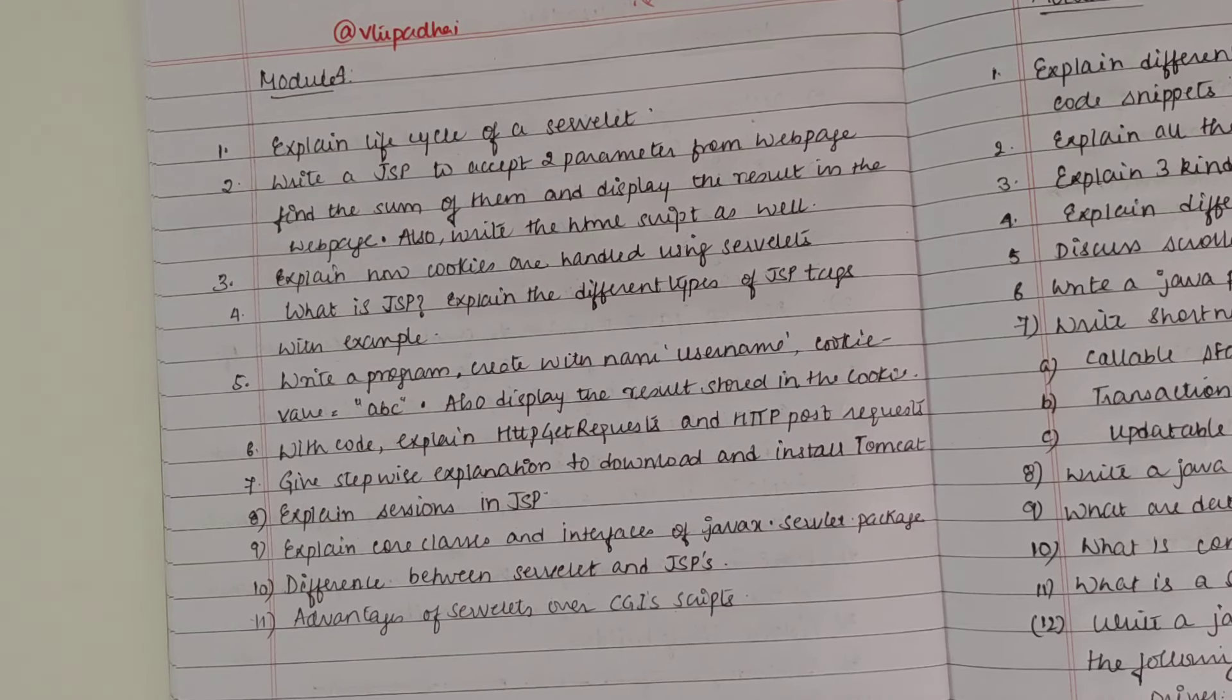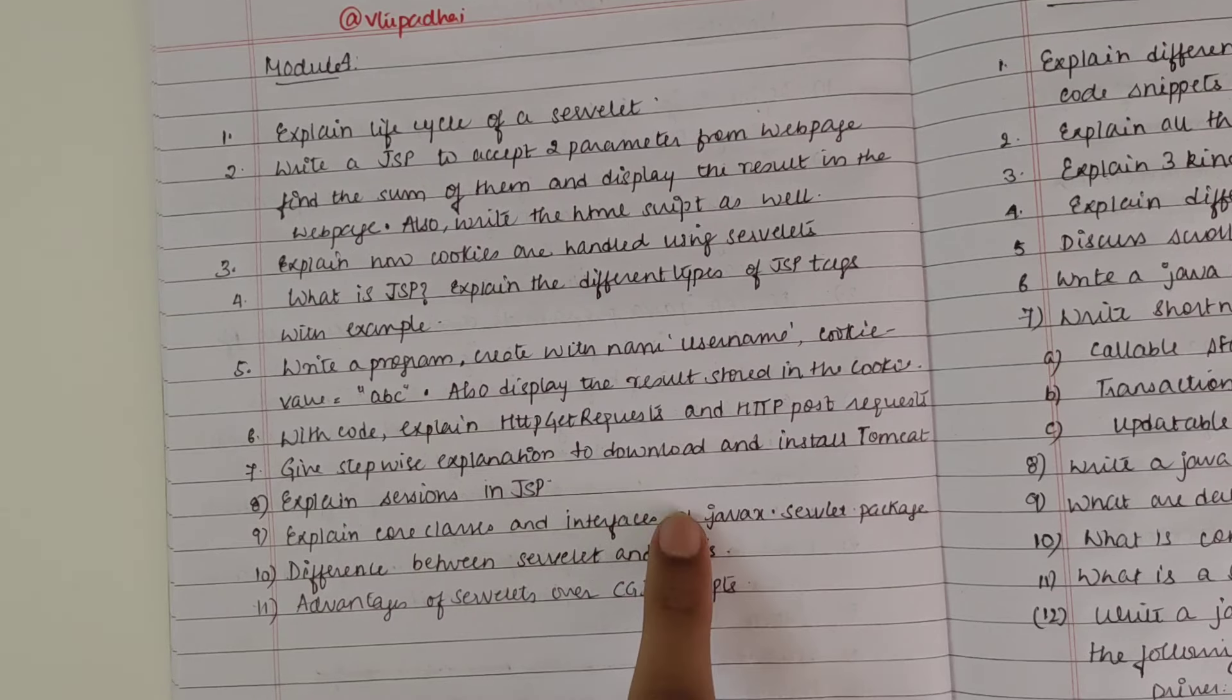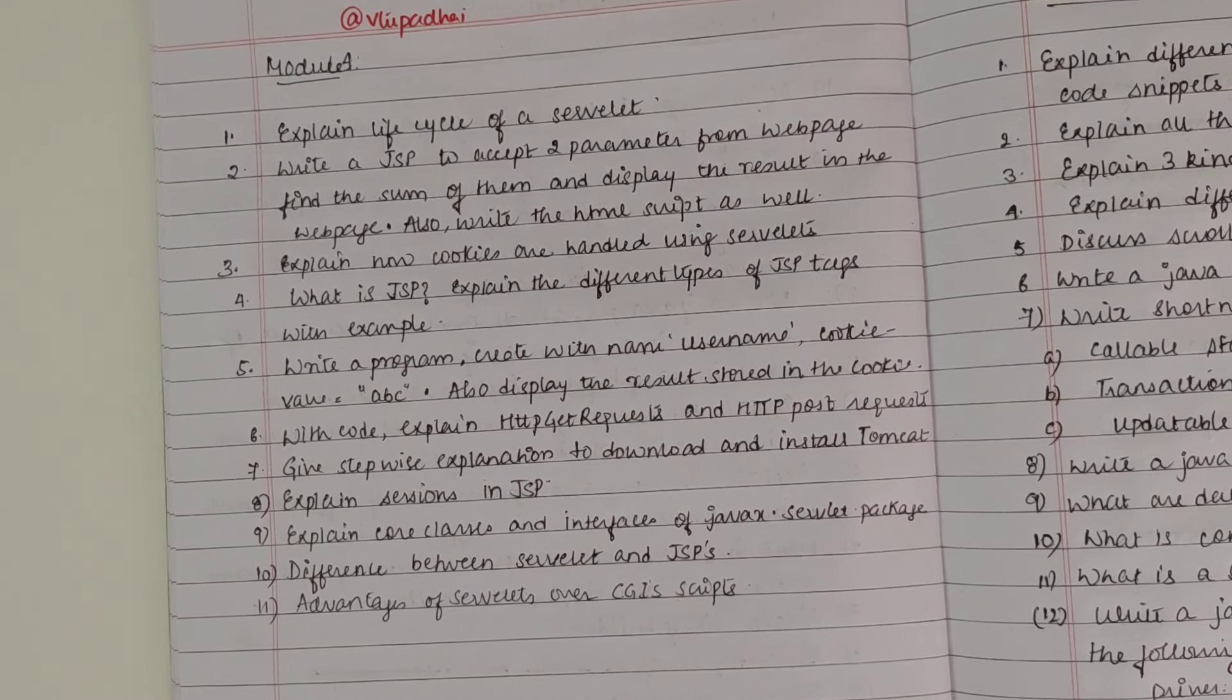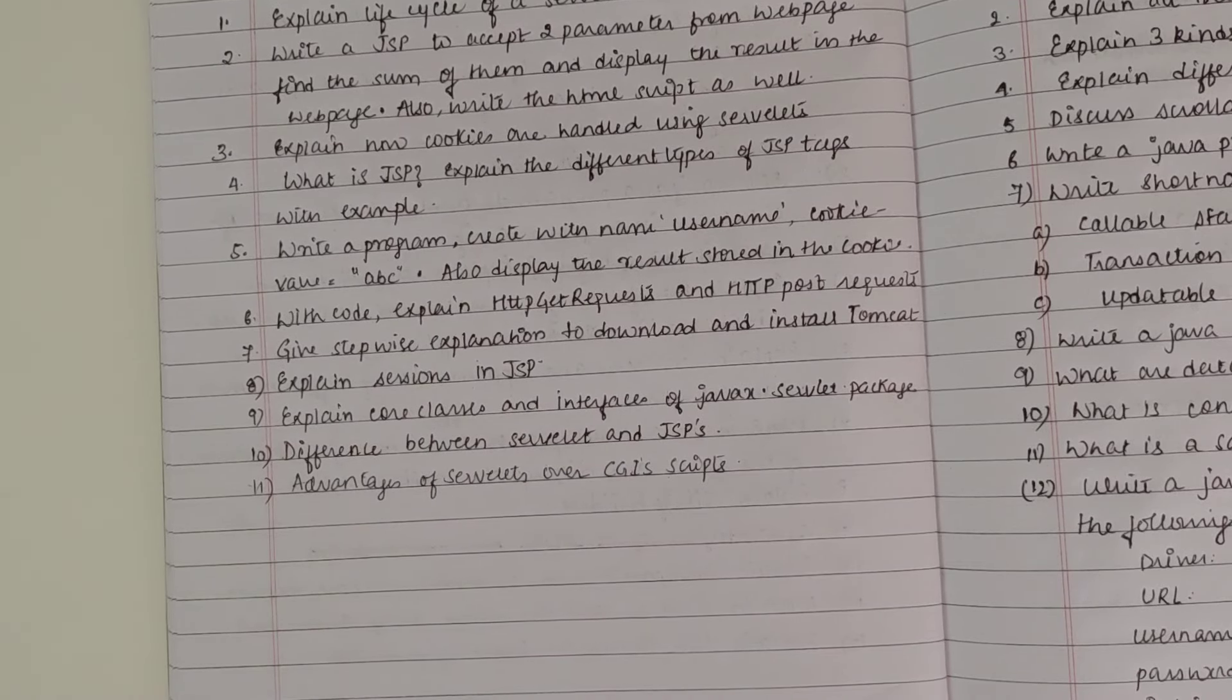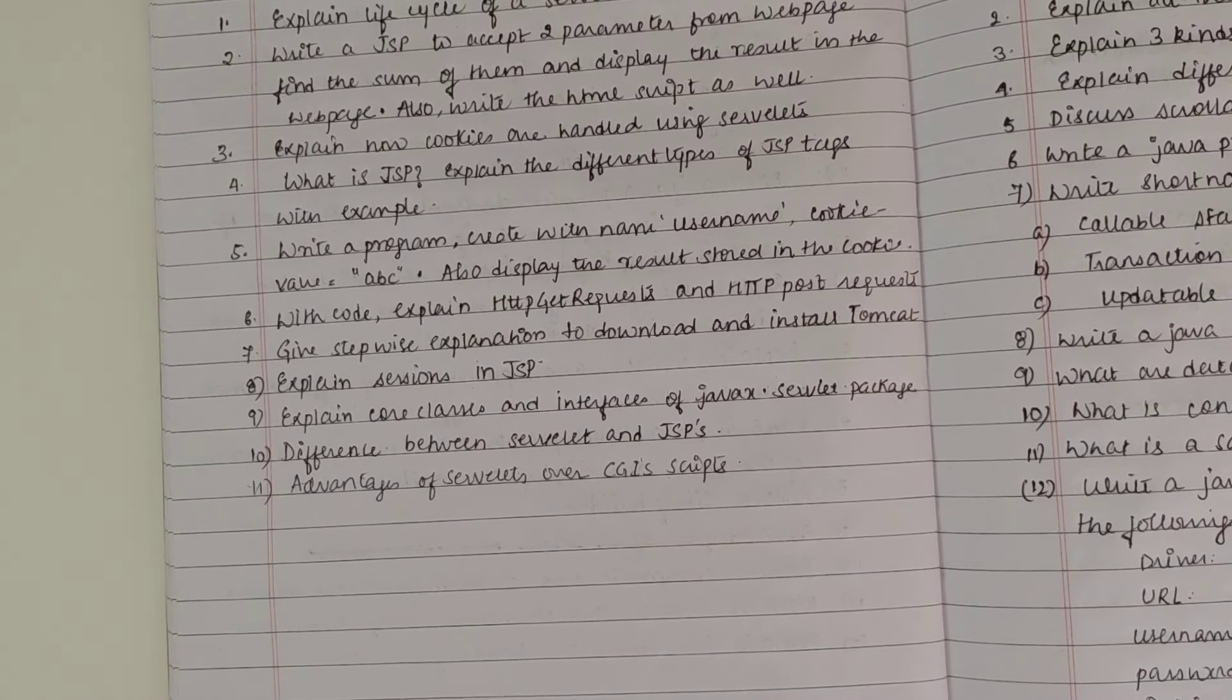Explain HTTP GET request and HTTP POST request. Explain the sessions in JSP. Explain the core class and interface of javax.servlet package. Difference between servlet and JSP and advantages of servlets over the CGI scripts. These 11 questions are most repeated questions which have appeared in all the VTU papers, internal question papers, and model question paper.